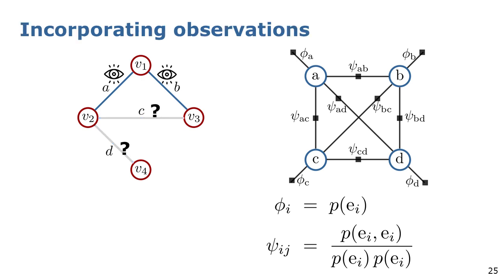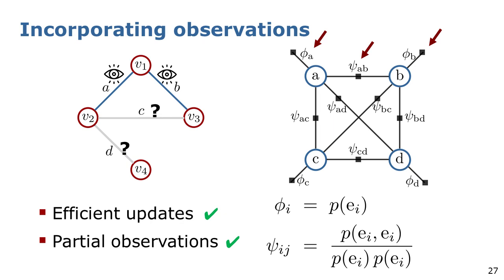We incorporate the robot observations during navigation into our model by incrementally updating the factors. For example, if during a task the robot observed the state of edge A and B, we update the corresponding marginal probabilities and thus the associated factors. These updates are efficient and allow us to easily incorporate partial observations as we update only the factors associated with the observed edges.